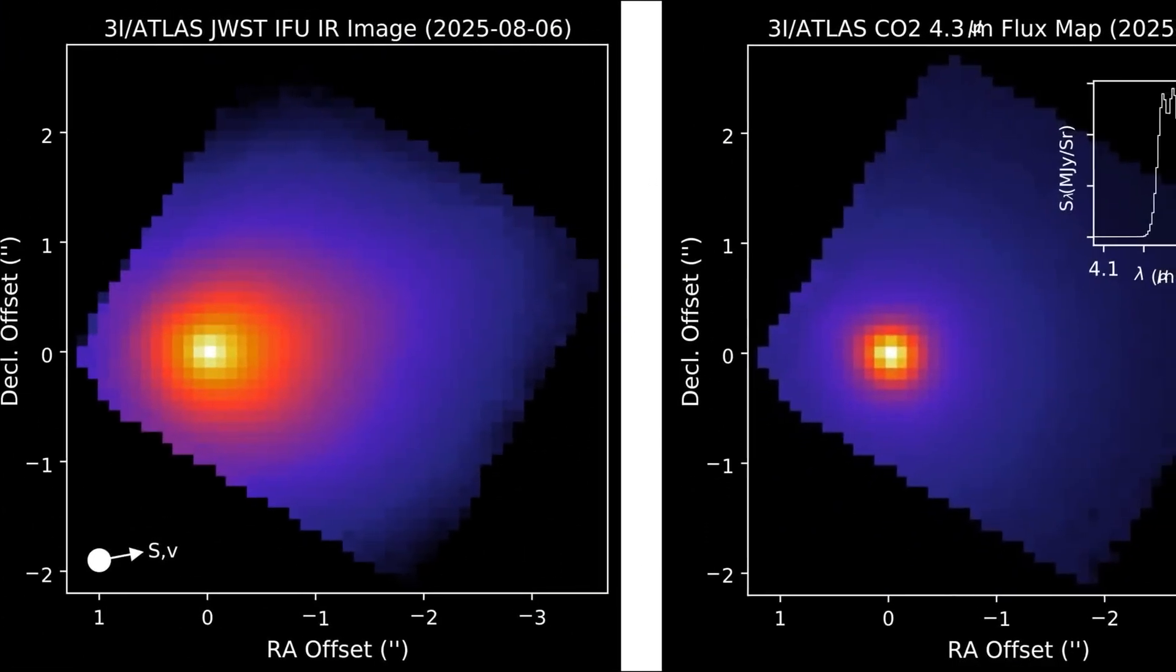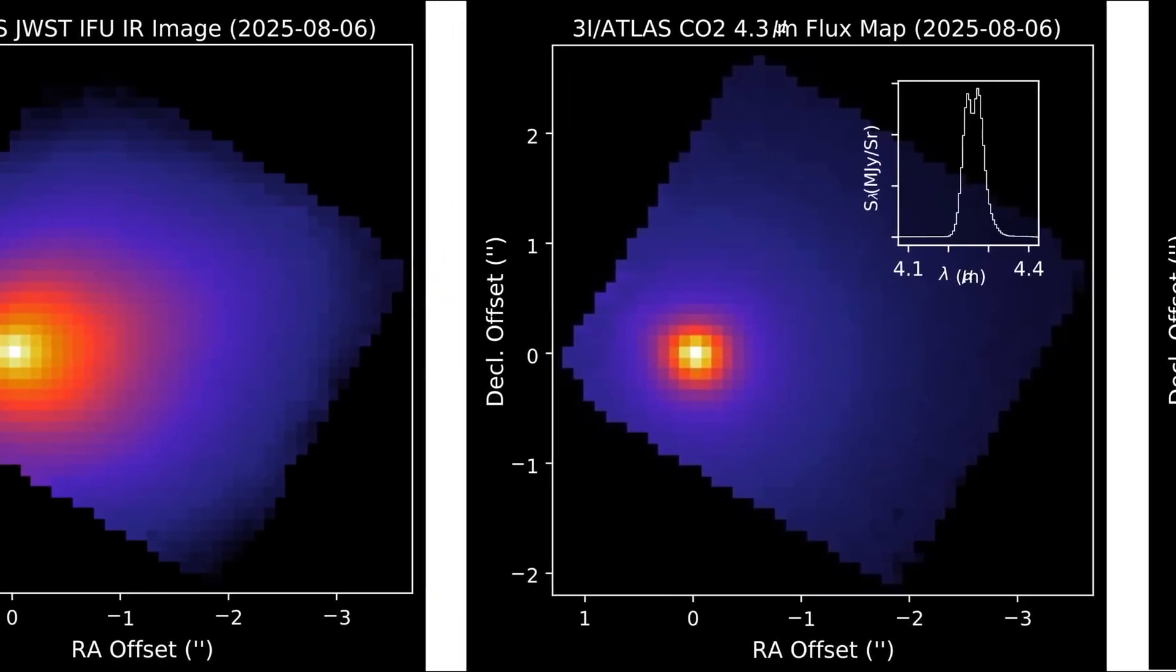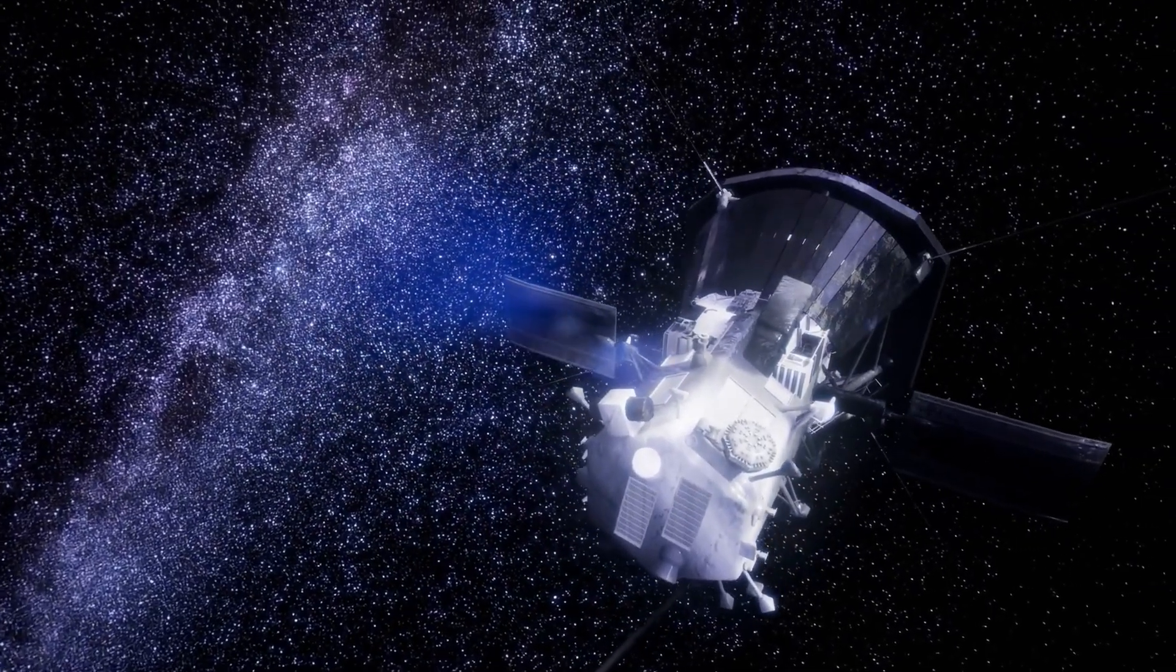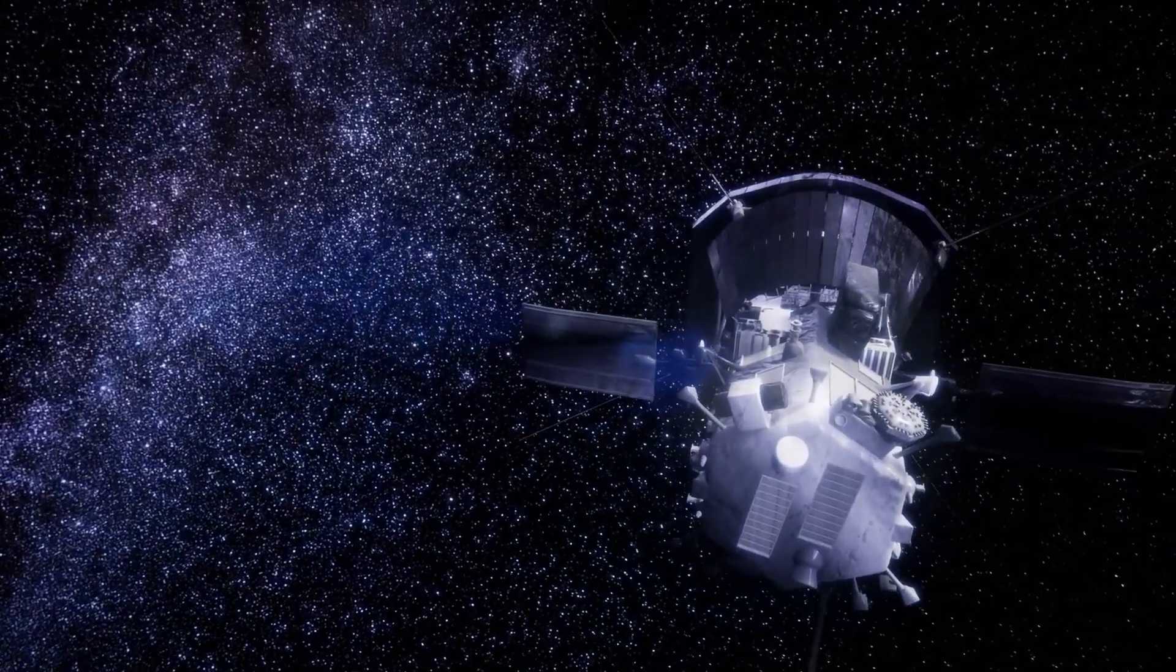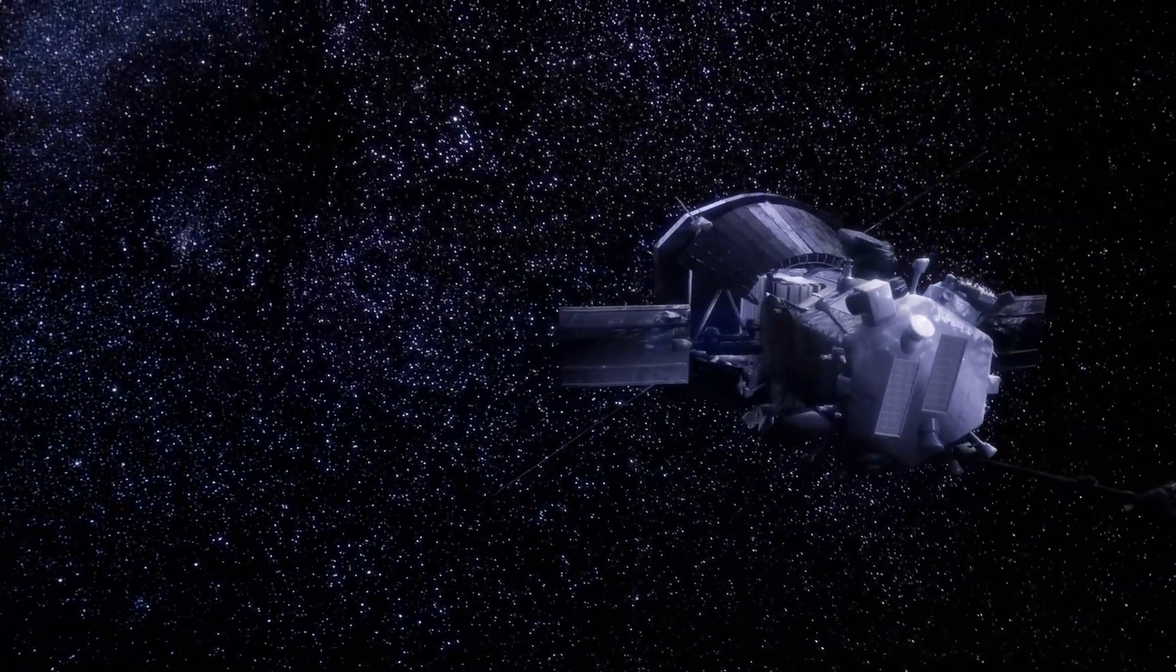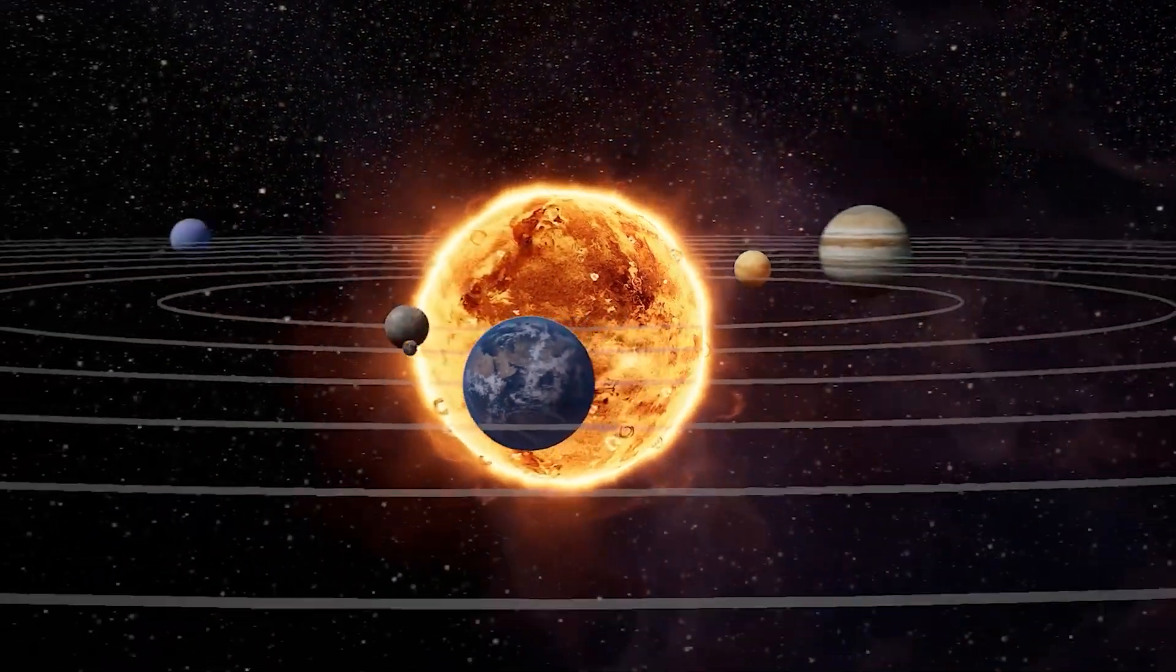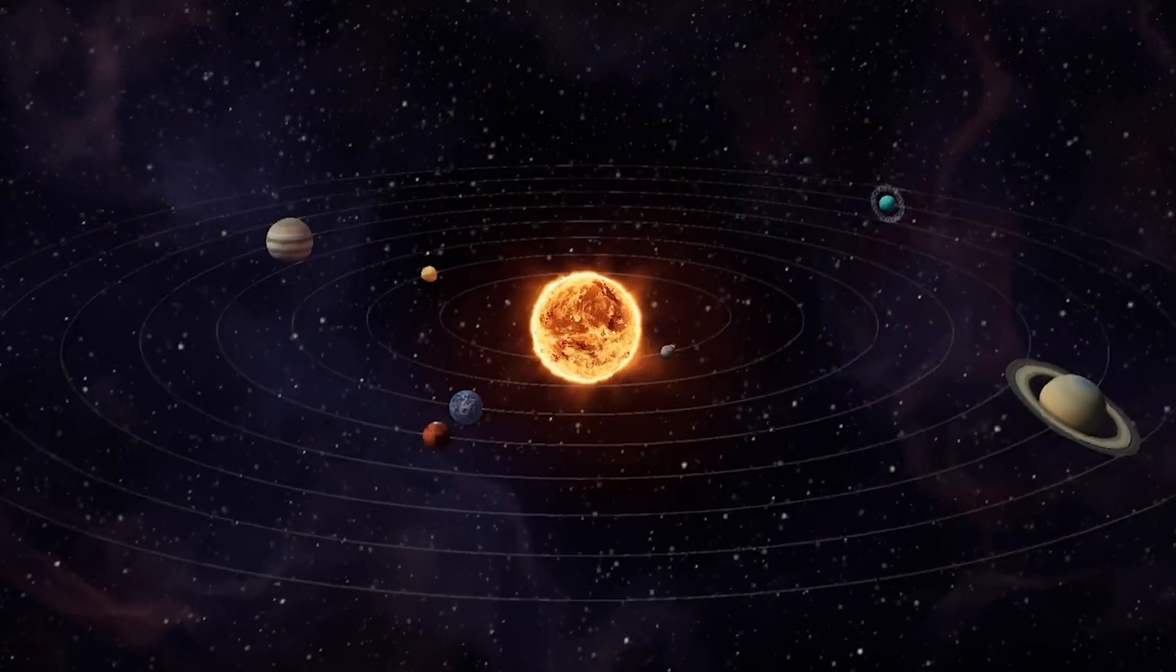And as ATLAS continues its journey inward, the stage is set for a confrontation between theory and reality. The numbers are staggering. At this moment, 3I/ATLAS is racing at 60 kilometers per second. By the time it swings closer to the sun, that speed will rise to nearly 68 kilometers per second.